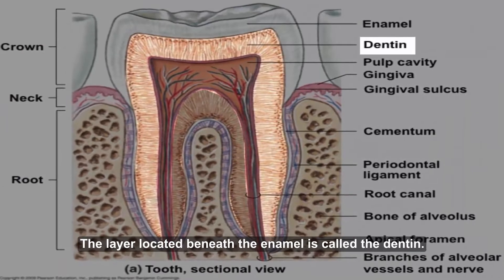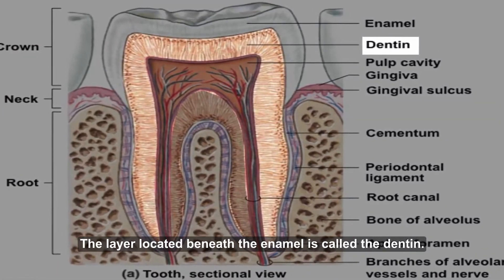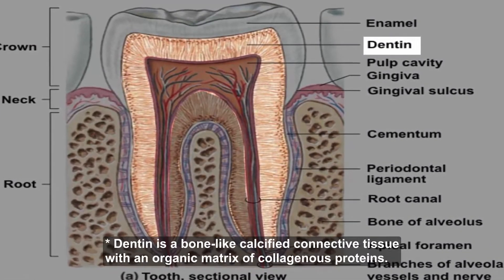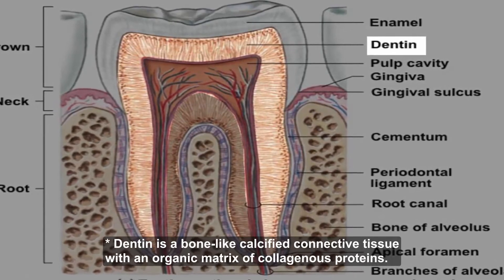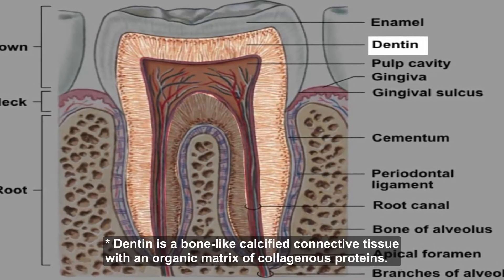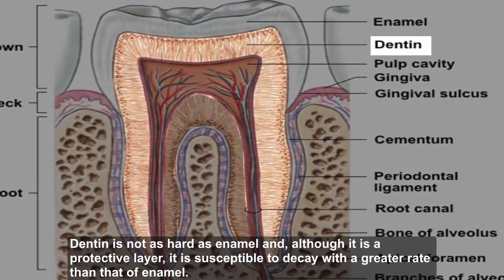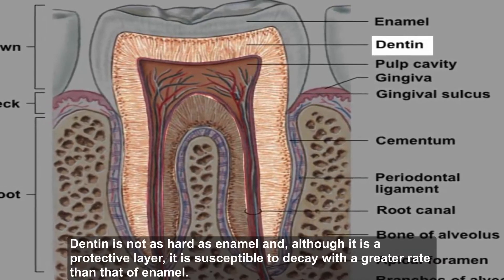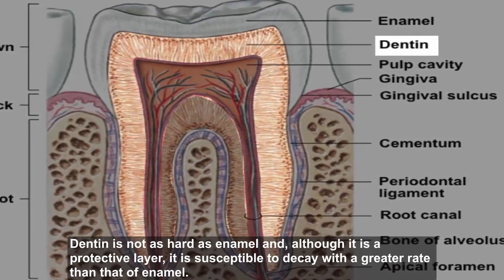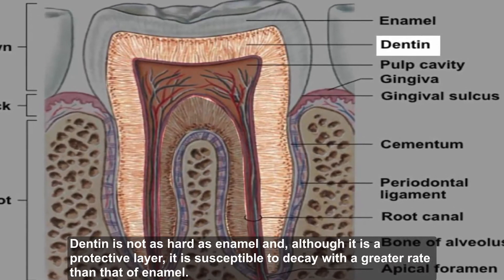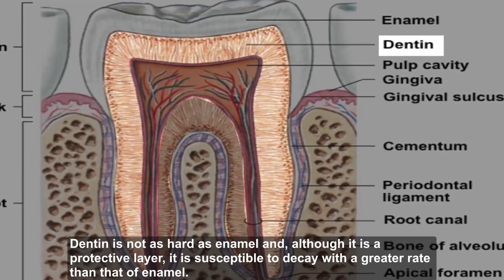The second major layer or part of the crown is dentin. Dentin is a bone-like calcified connective tissue with an organic matrix of collagenous protein. Dentin is not as hard as enamel, and although it is a protective layer, it is susceptible to decay at a greater rate than that of enamel.